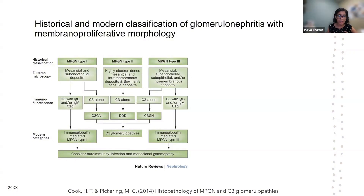MPGN type 3 was again similar types of deposits as MPGN type 1, but a little bit more varied, and was also C3GN. So C3GN, along with dense deposit disease, was grouped into something called C3 glomerulopathies. I'll talk a little bit more about what the mechanisms of C3 glomerulopathy in general are.